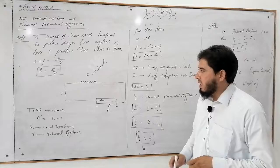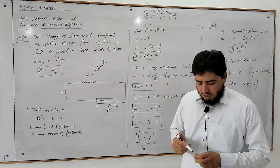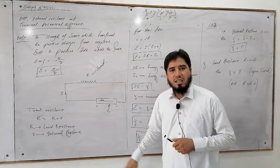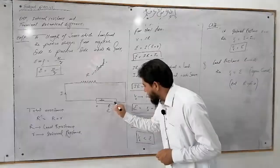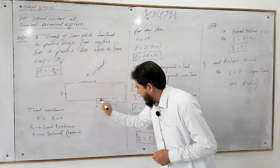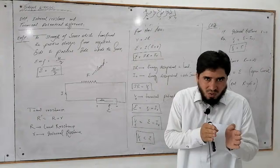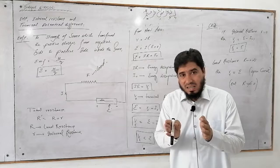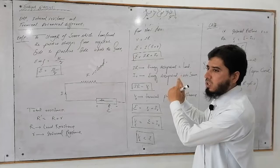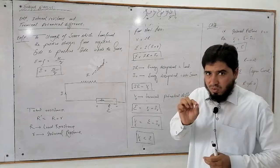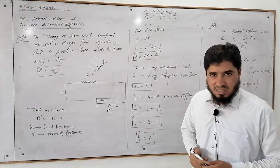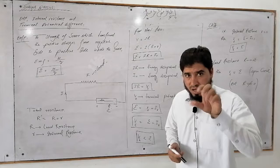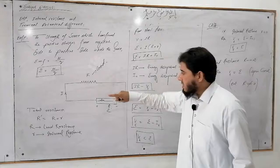Ab circuit banane ke liye, mathematical expression nikalne ke liye, yahan par ek resistance to ye hai which is called load resistance. Aur students, ek resistance is cell ke andar hai, yaani is source ke andar bhi hai, jo hamein to nazar nahin aa raha lekin hai. Jab positive charges yahan se yahan tak aate hain, to lazmi baat hai ye cell ke andar walls ke saath collision karega, aapas mein bhi collision karega. To iska matlab yeh hua ki jab positive charges is point se is point tak aate hain, to ye kuch na kuch energy loss karta hai — intahai small. Isliye phir isko kehte hain small resistance inside the cell, ya isko kehte hain internal resistance. Lekin ye intahai small hota hai, lekin energy loss to hai, chahe kam ho, bahut kam ho, lekin actual to hai.